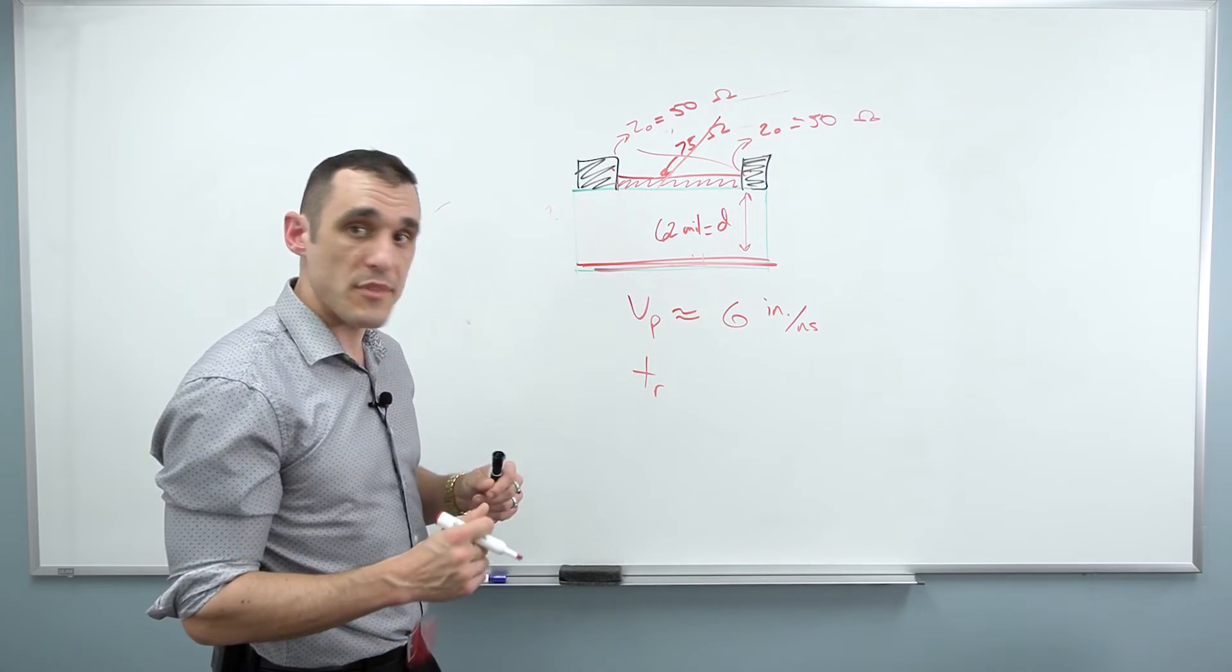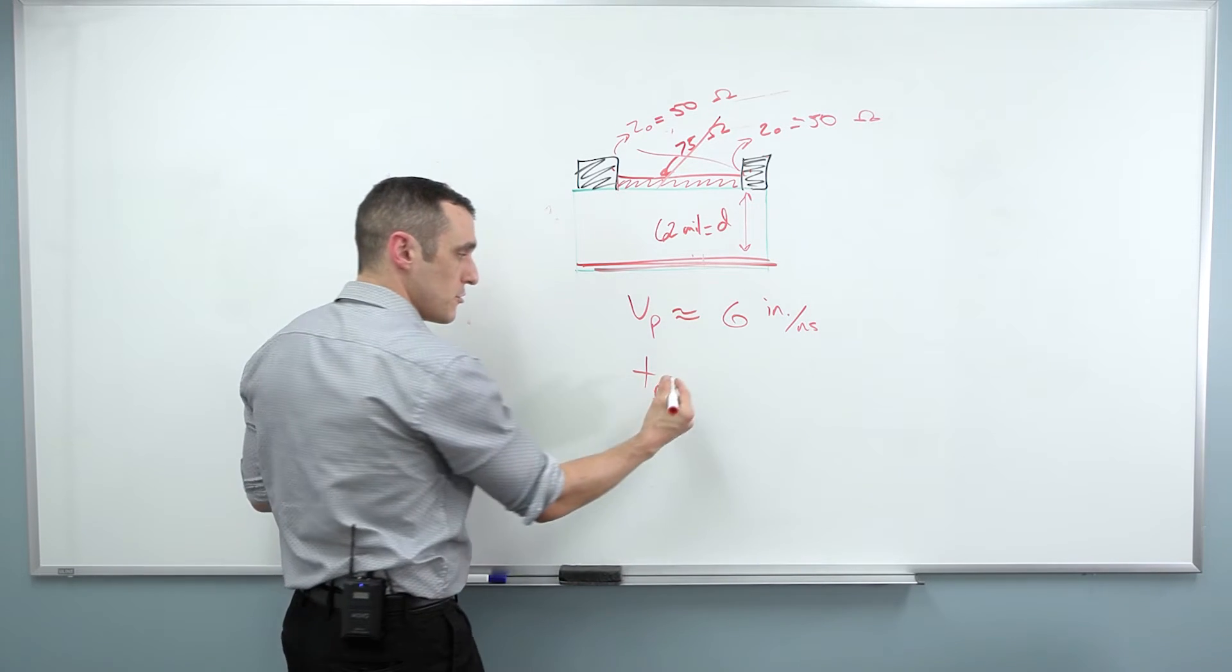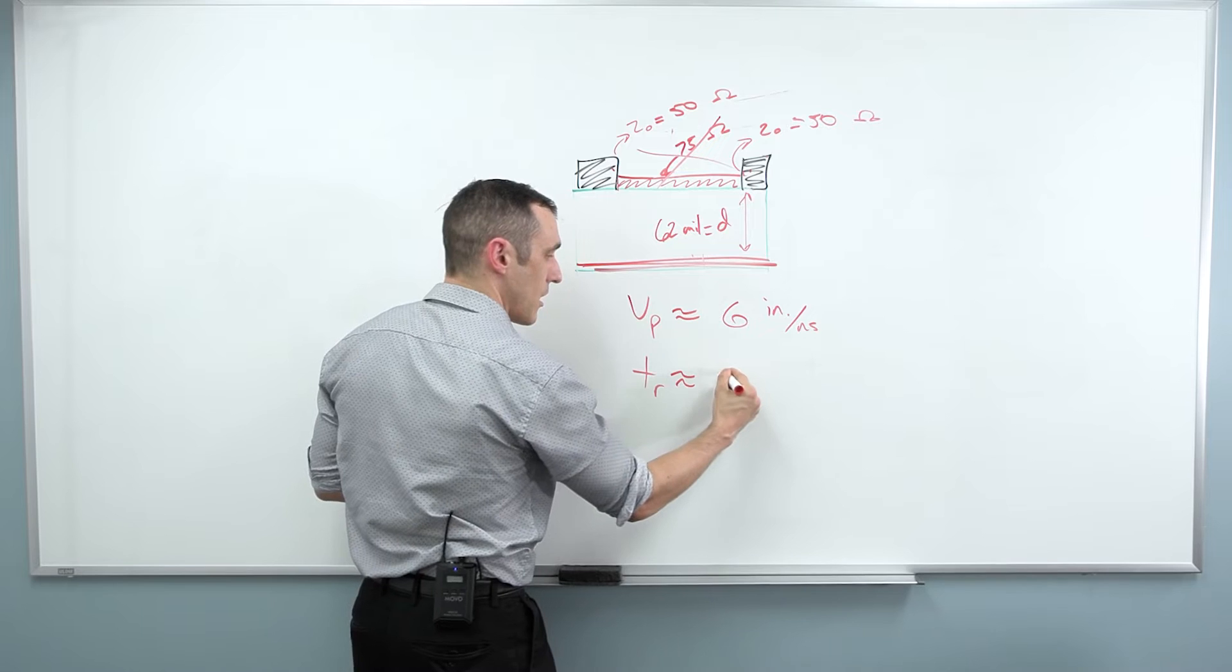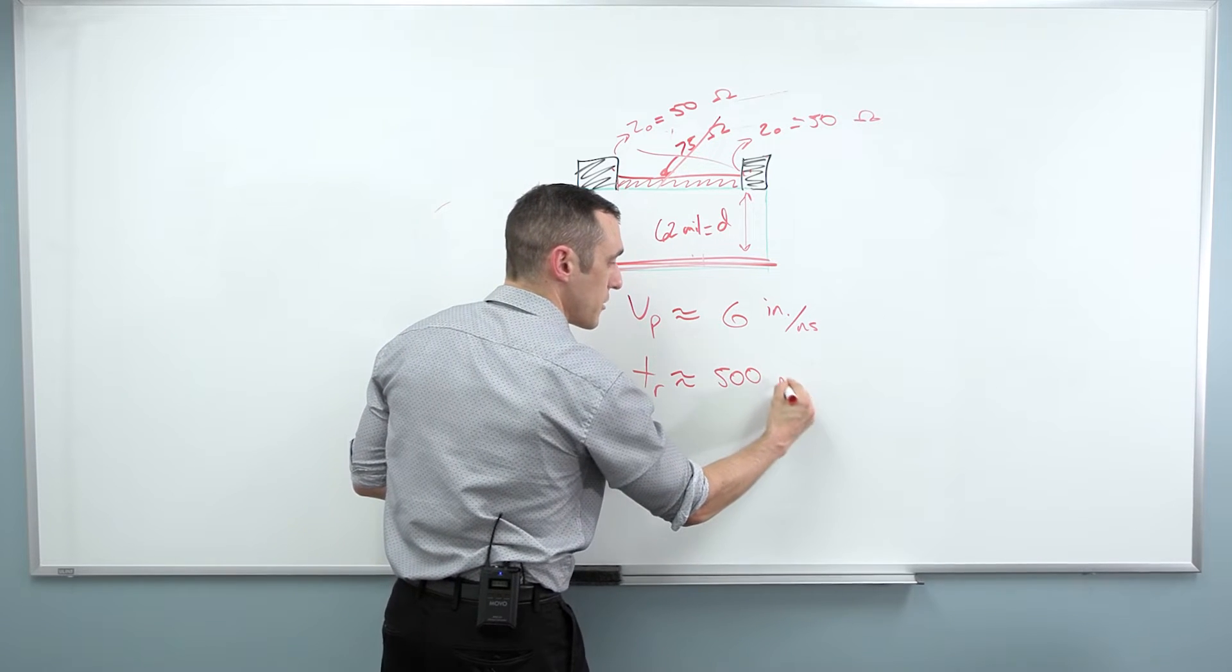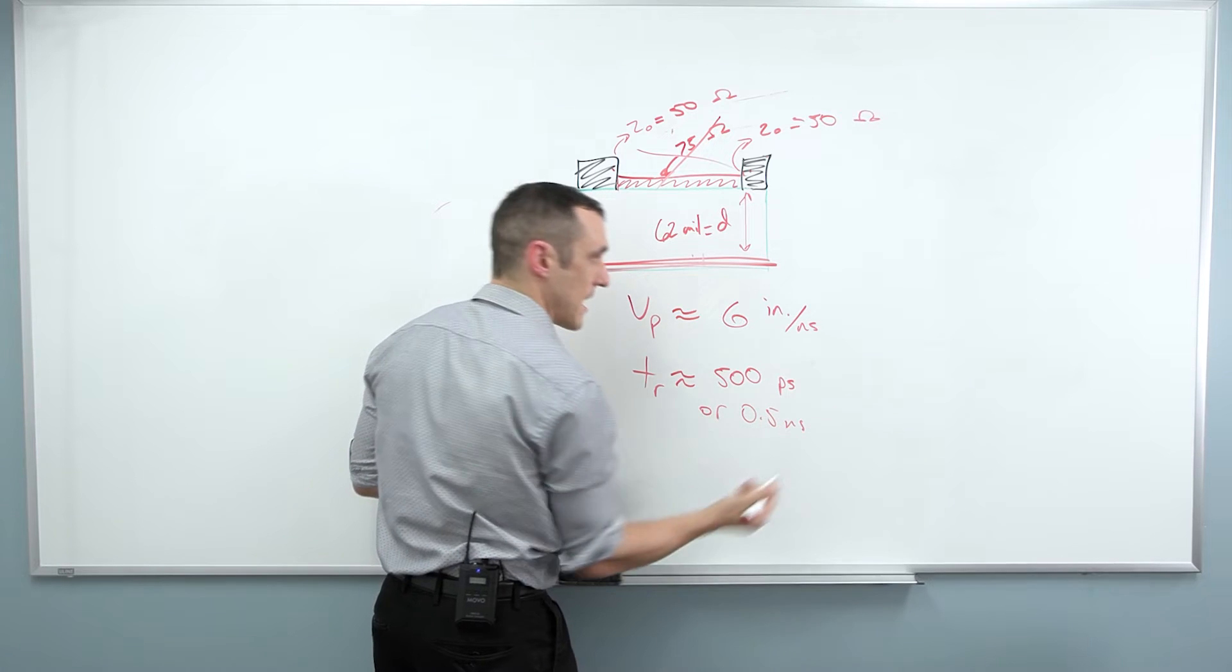So what I'm gonna do now is I'm gonna use the USB 2.0 high-speed rise time as our limiting value, and I'm gonna just use that because we're gonna look at that a little bit more closely in another video.